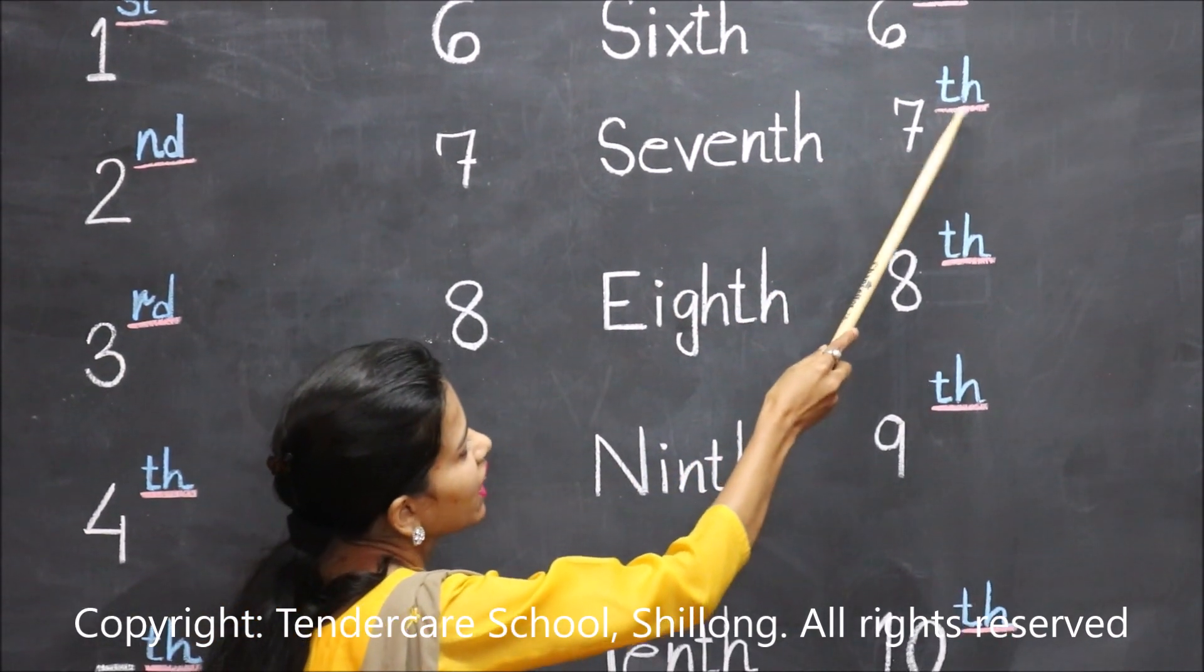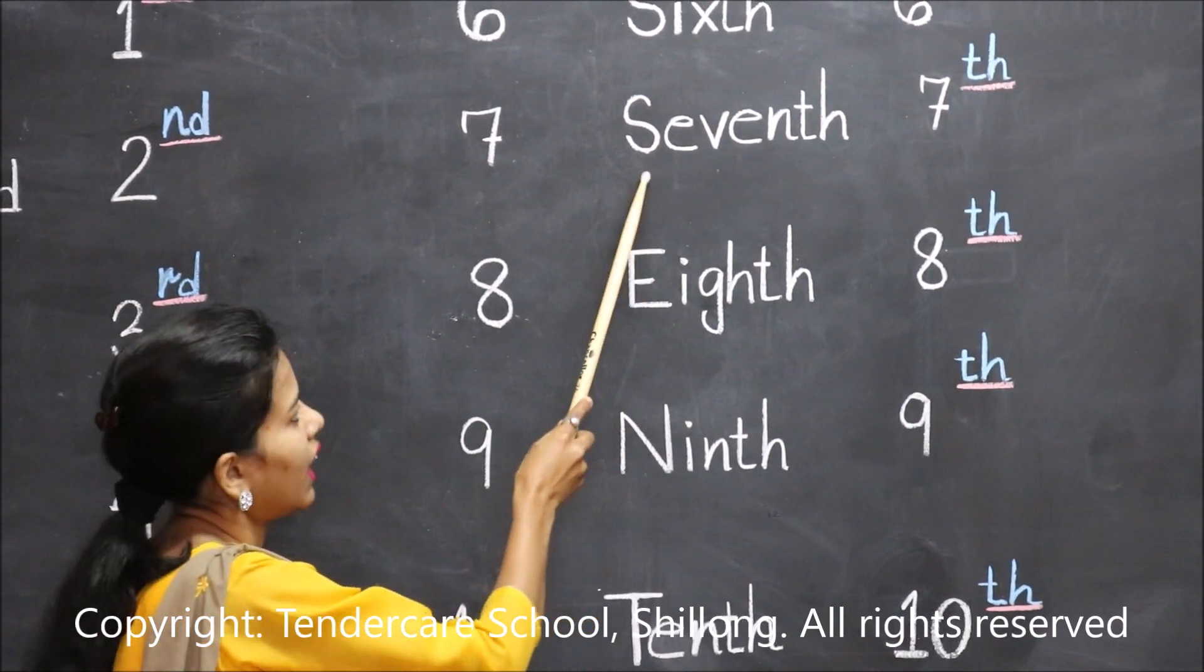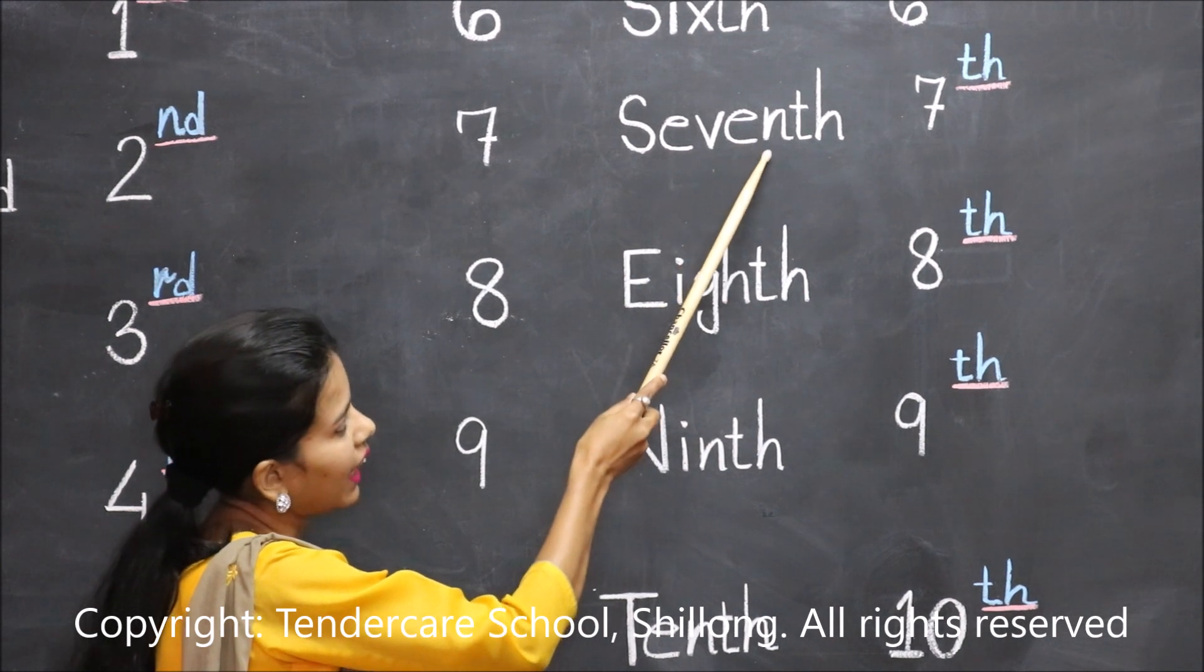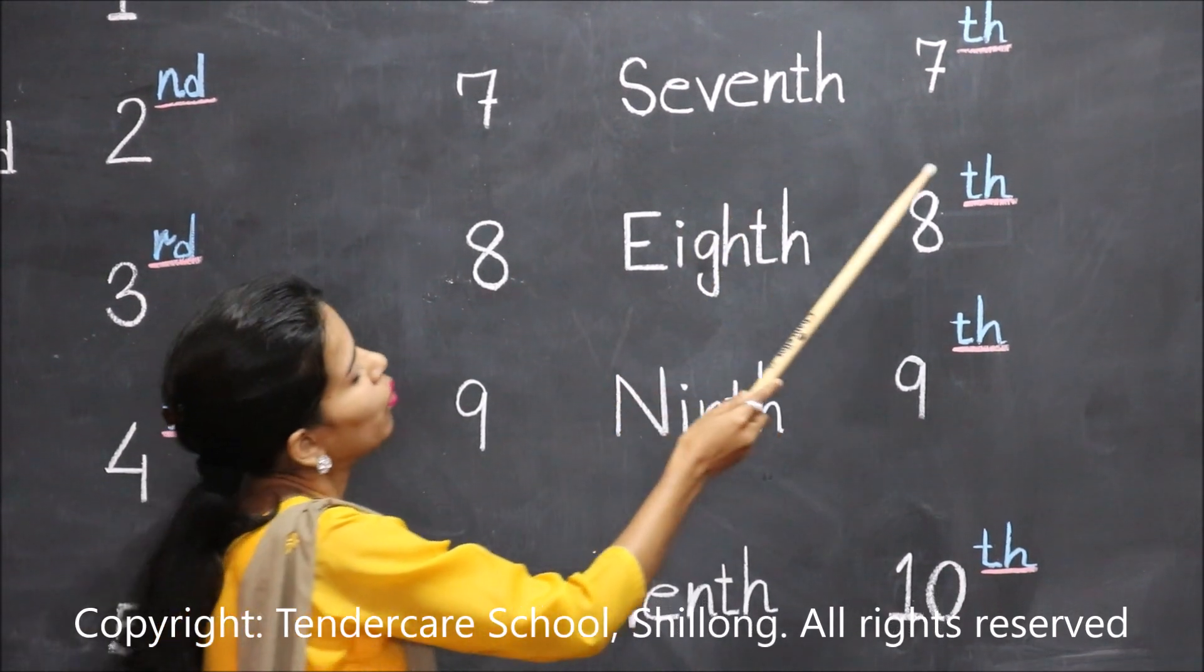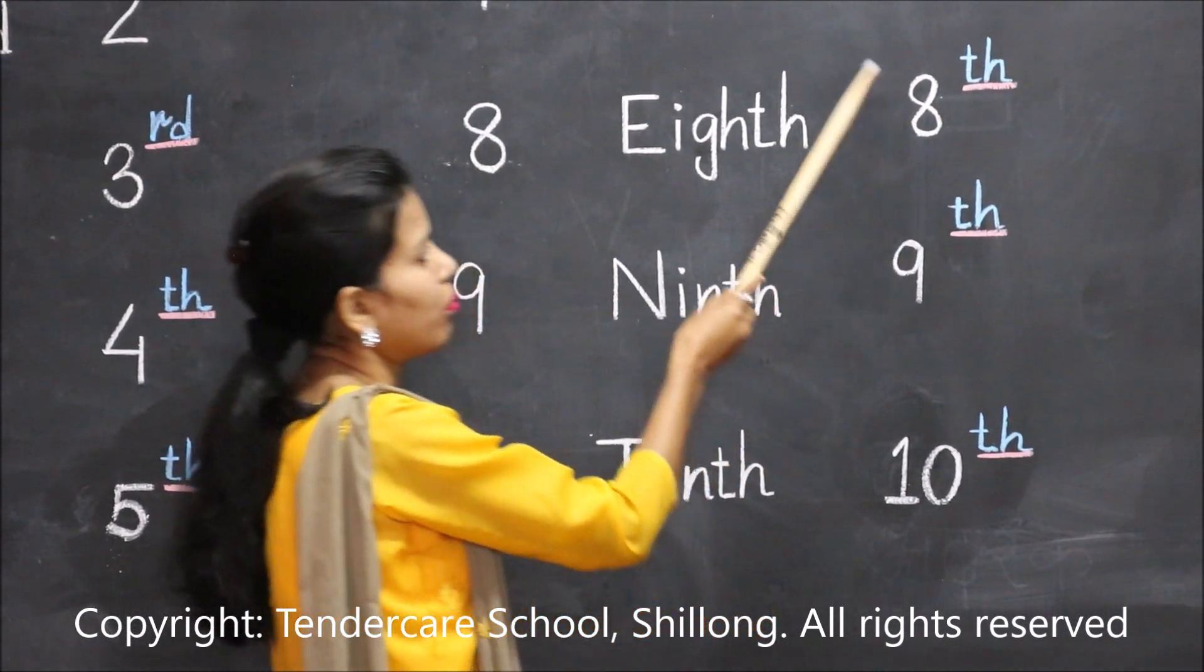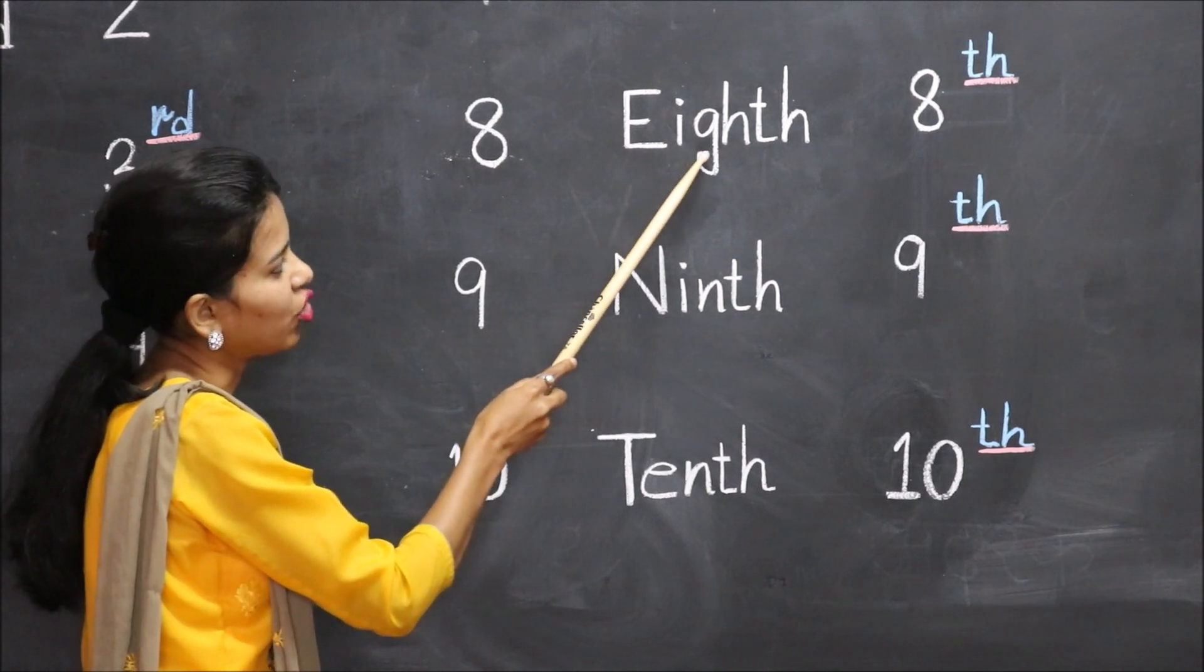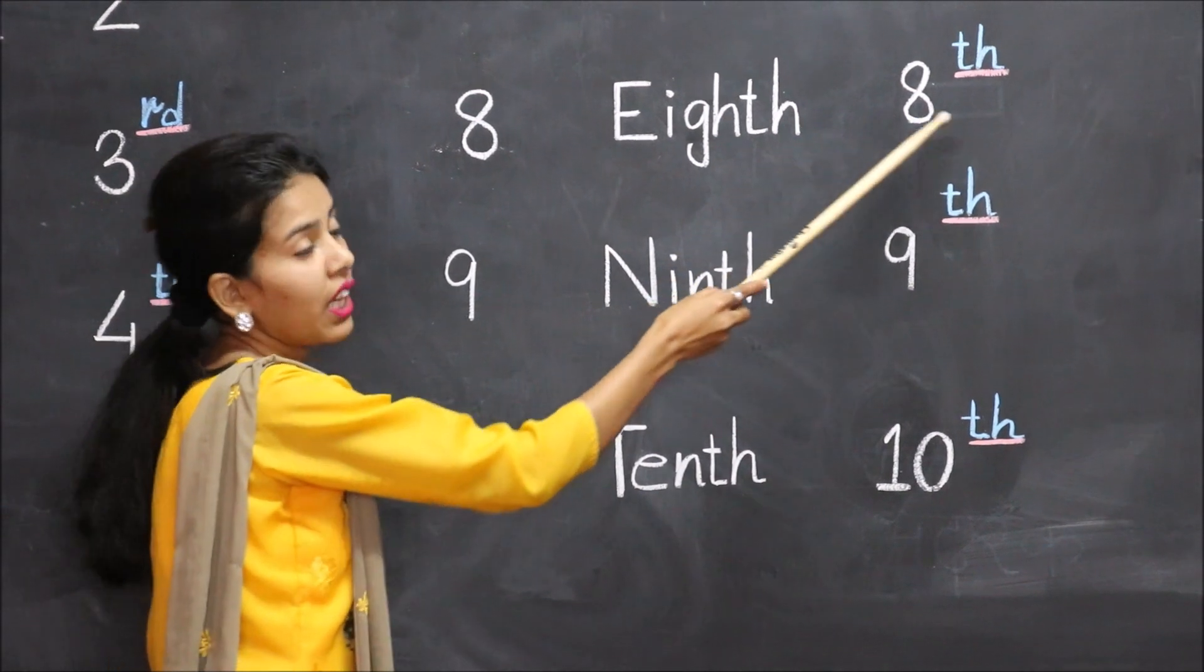sixth. When we add 'th' with seven, it becomes seventh. S-E-V-E-N-T-H, seventh. When we add 'th' with eight, it becomes eighth. E-I-G-H-T-H.